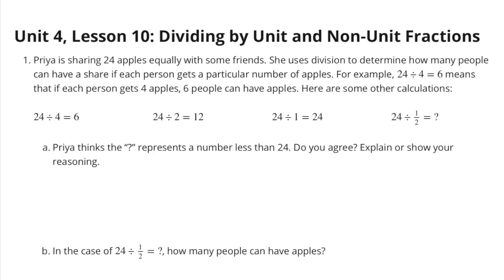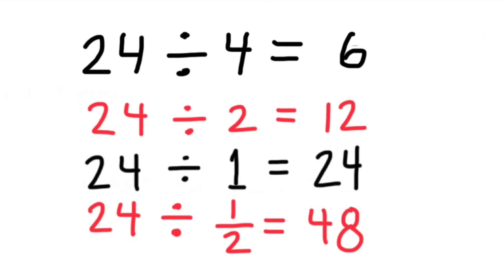Part B: In the case of 24 divided by a half equals question mark, how many people can have apples? There is a pattern. 24 divided by 4 equals 6, 24 divided by 2 equals 12, 24 divided by 1 equals 24, and 24 divided by a half equals 48. So 48 people could have some apple.